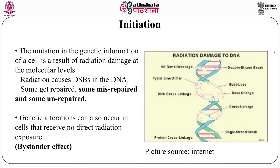What is initiation? The mutation in the genetic information of a cell is a result of radiation damage at the molecular level. Radiation can cause single strand breaks and double strand breaks in the DNA. It is the double strand breaks that are generally considered responsible for later development of carcinogenesis. All these damages — whether single or double strand breaks — get repaired. Some get misrepaired and some remain unrepaired. It is the unrepaired or misrepaired DNA damage that may later lead to carcinogenesis.